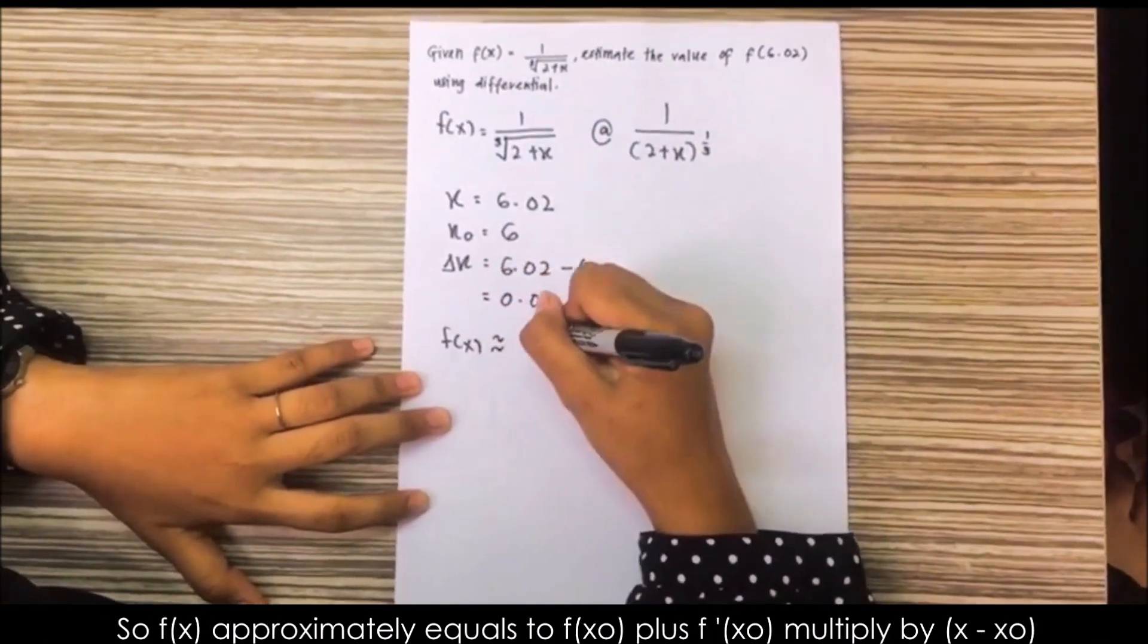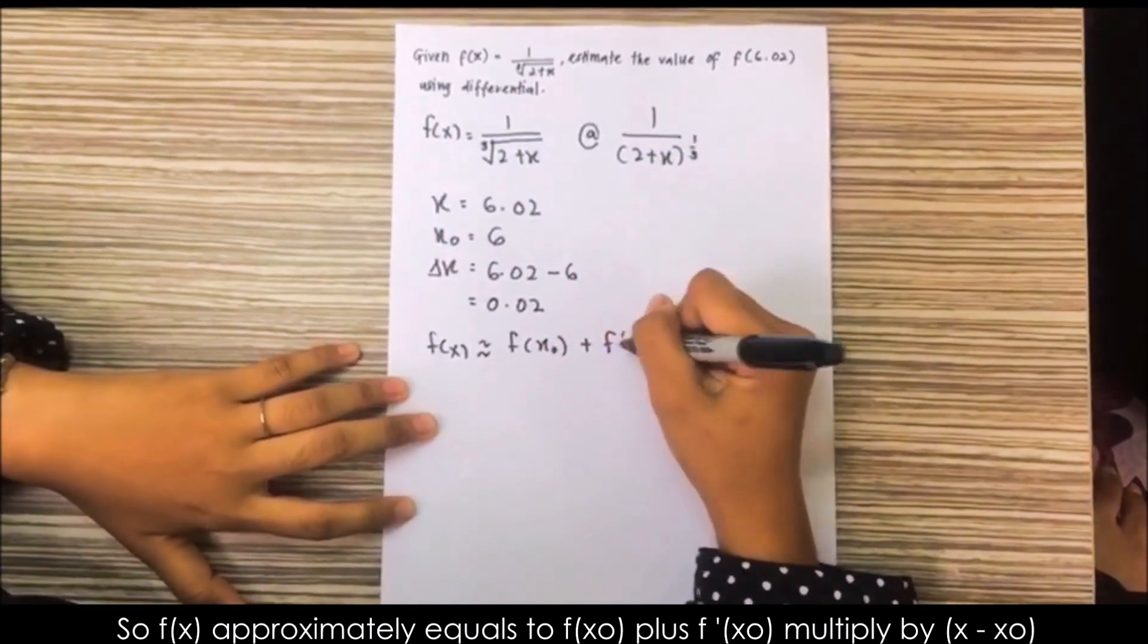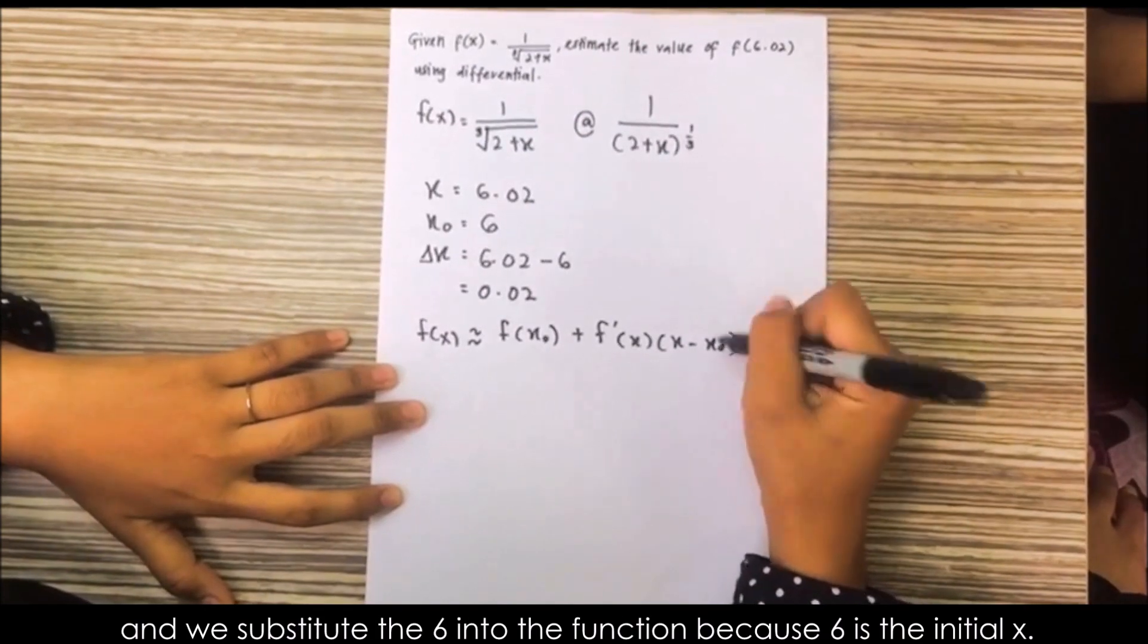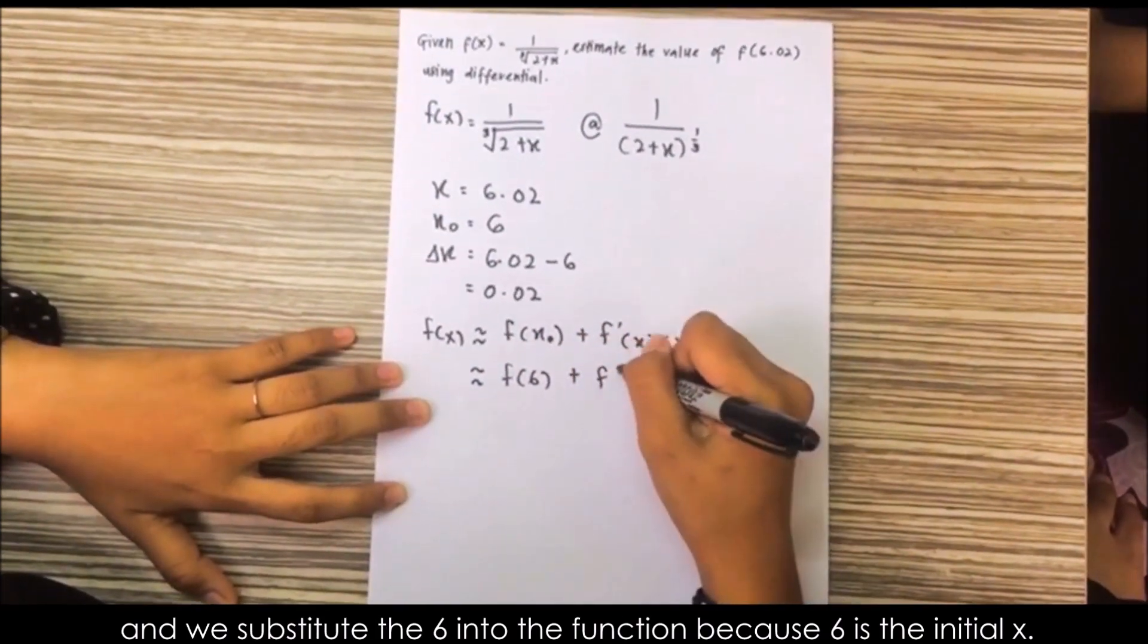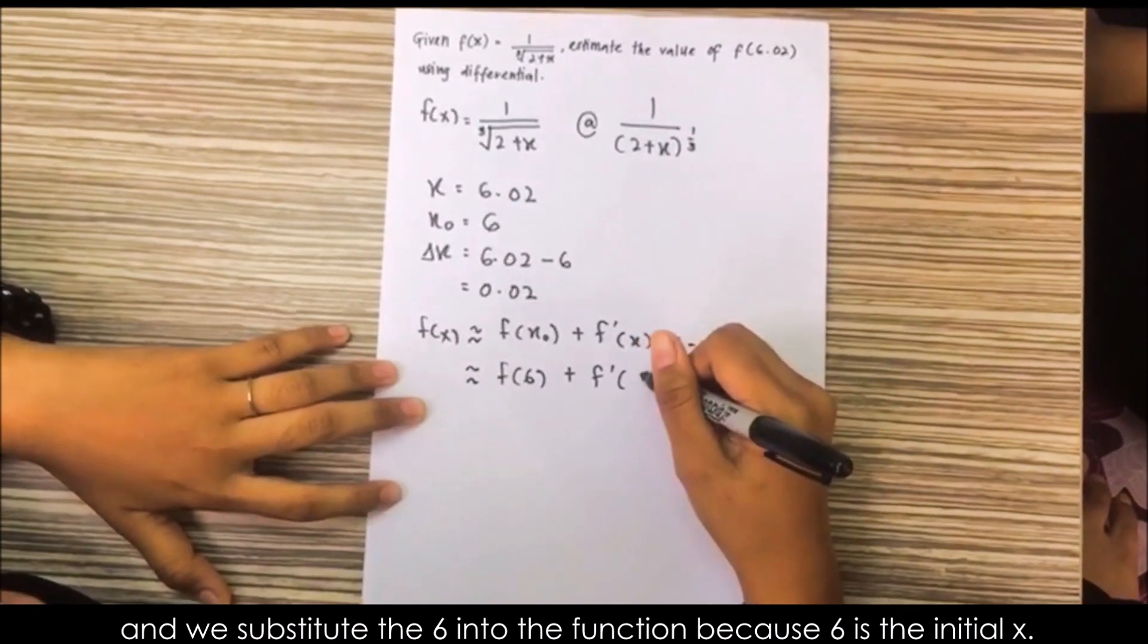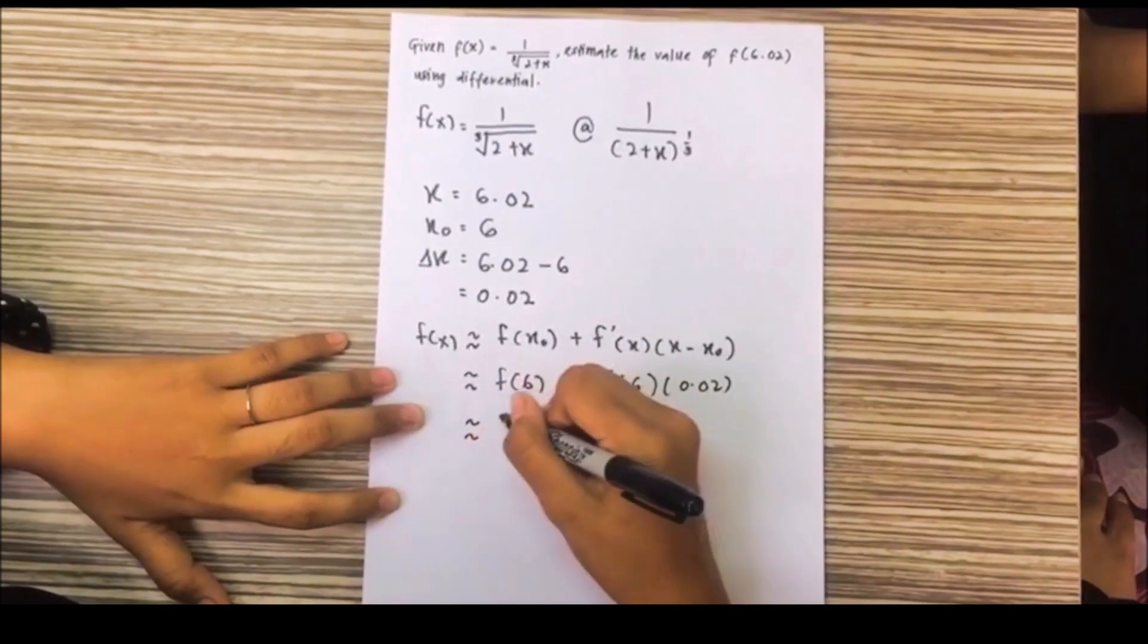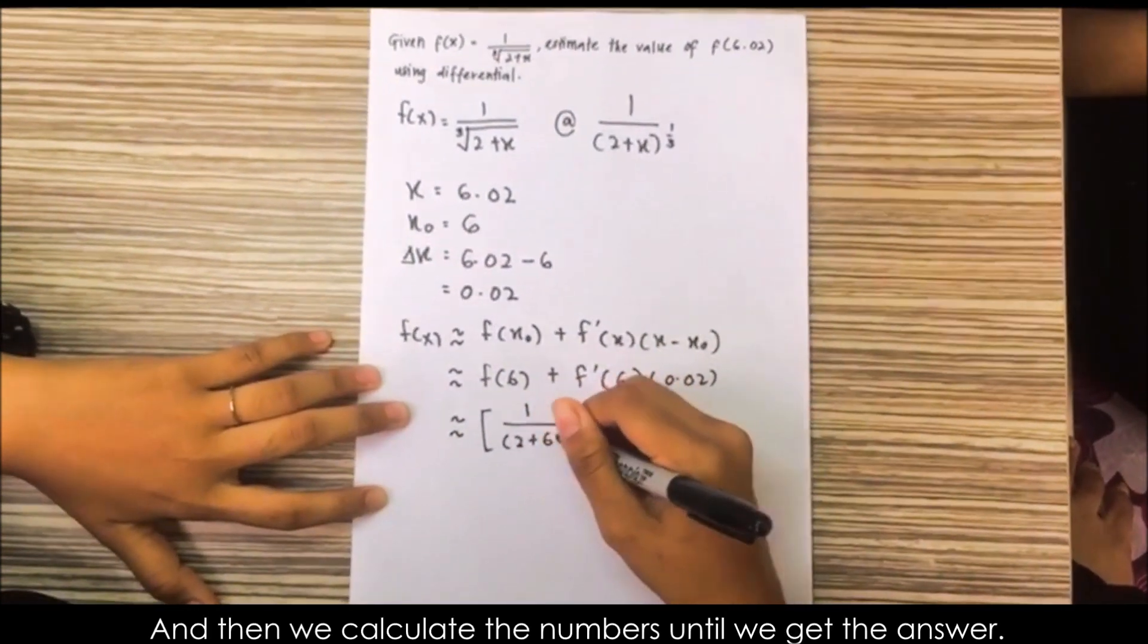So, f(x) approximately equals f(x initial) plus f'(x initial) multiplied by (x minus x initial). And then, we substitute the 6 into the function because 6 is the initial x. And then, we calculate the number until we get the answer.